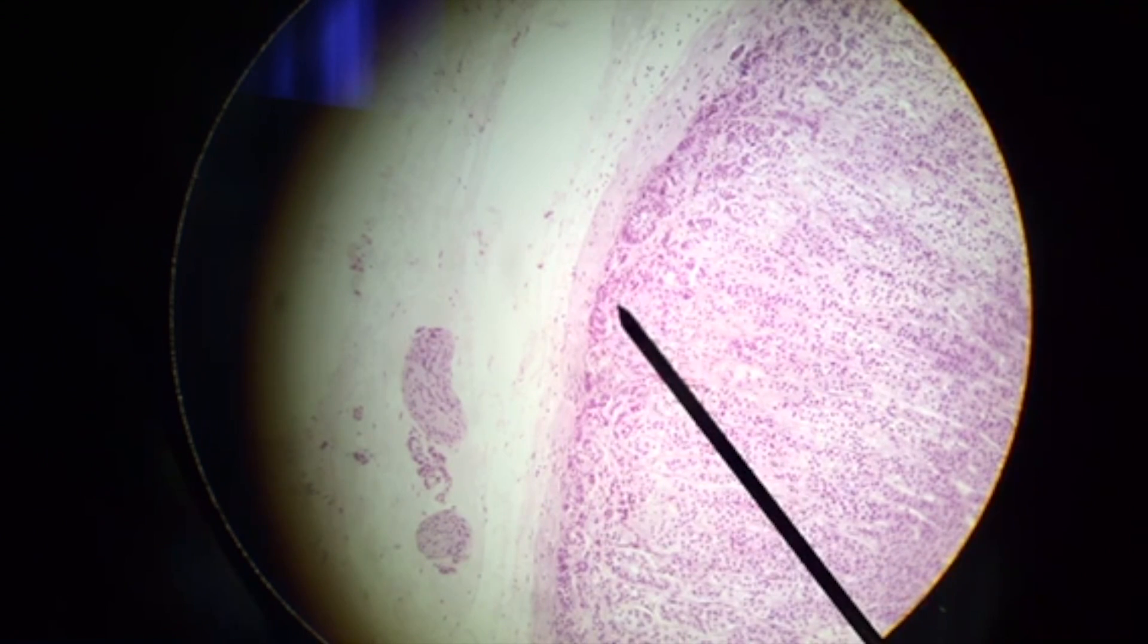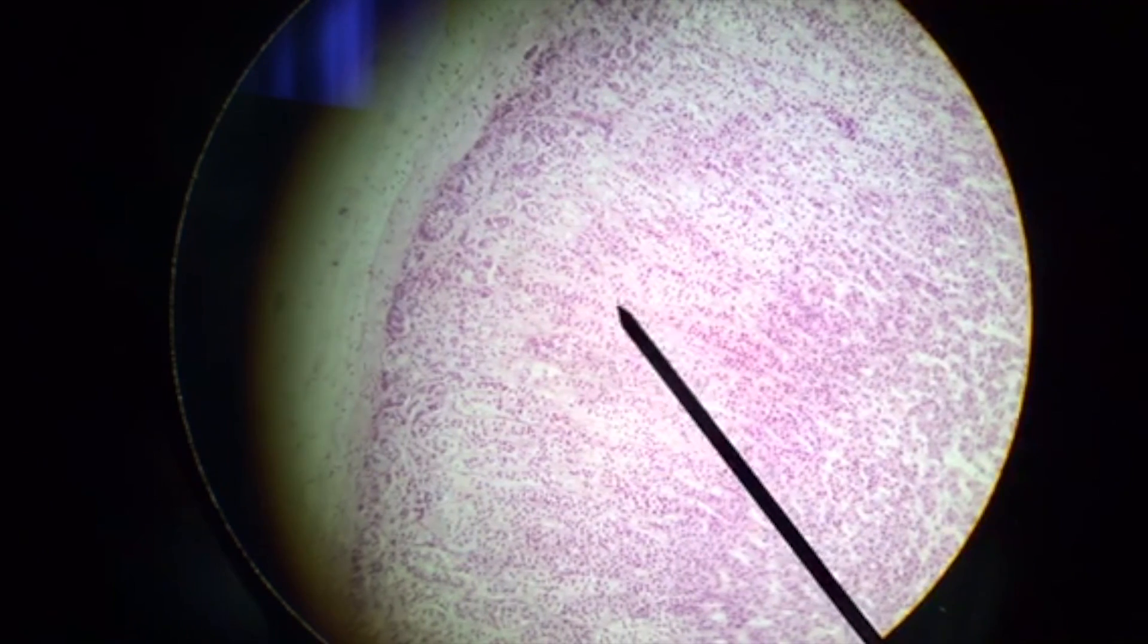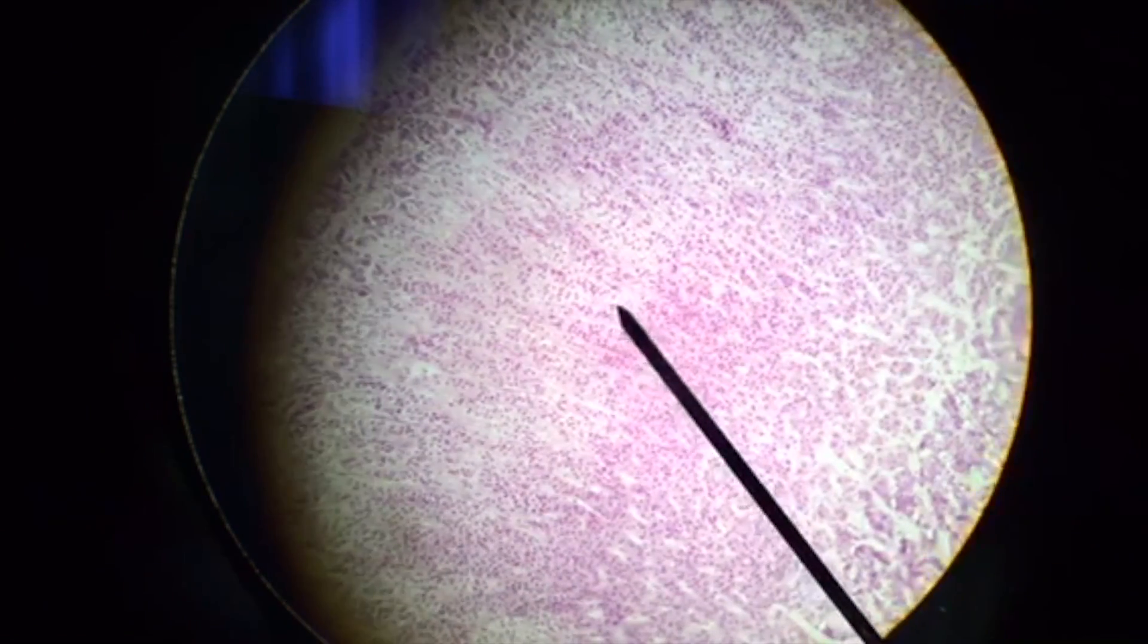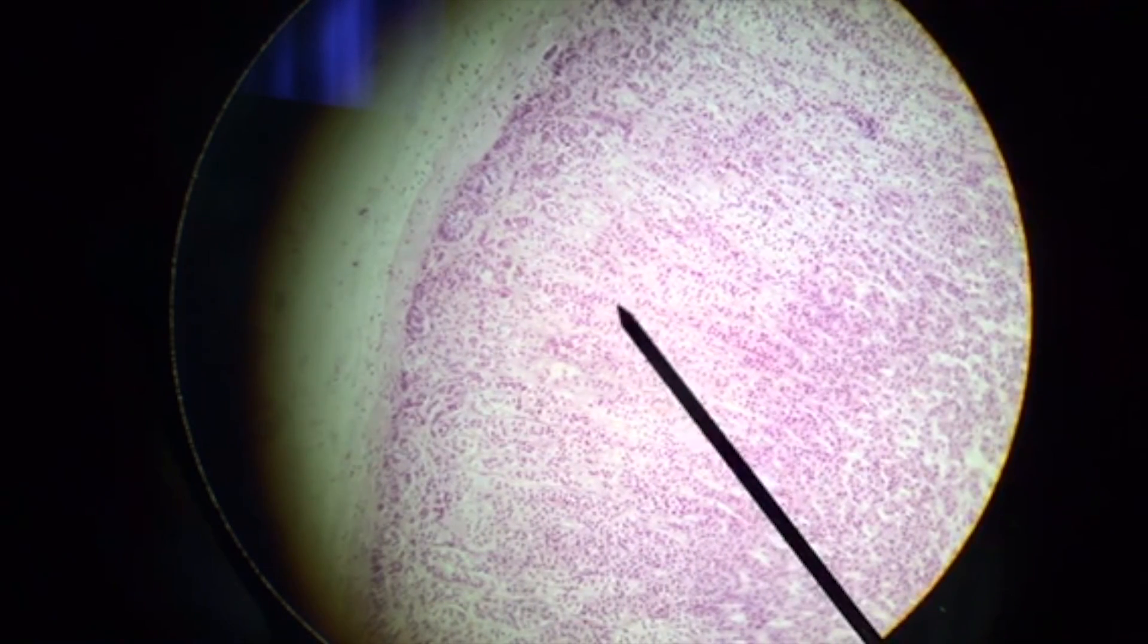The middle zone that we're going to look at next is the thickest and largest zone. The pointer is on it now. This zone is called the zona fasciculata. It is called fasciculata because of its arrangement in bundles. Its job is to make glucocorticoids or cortisol.